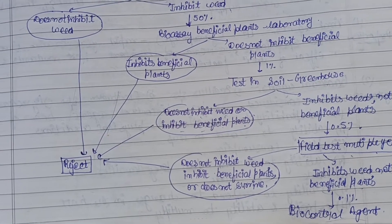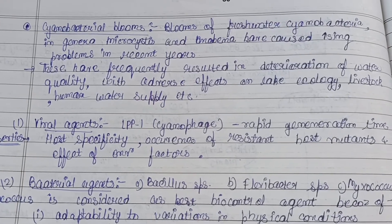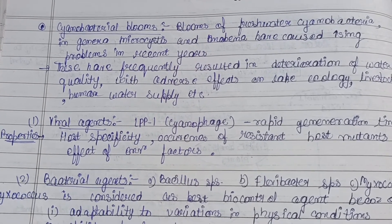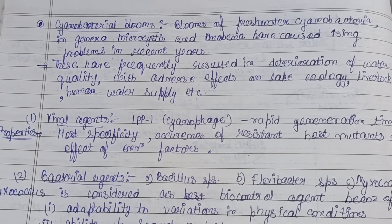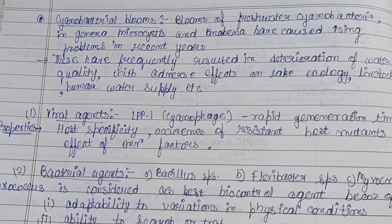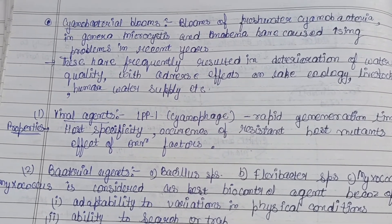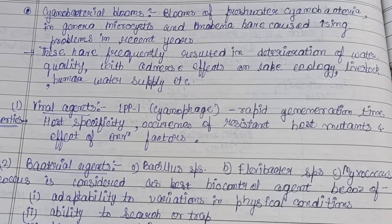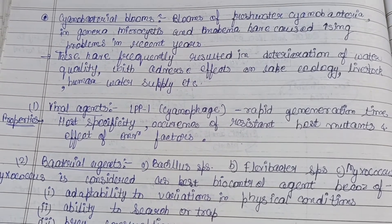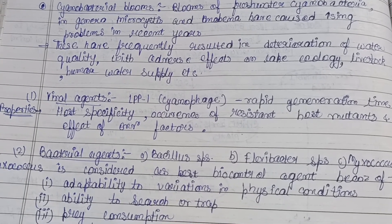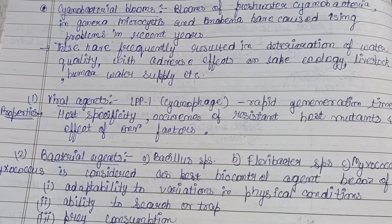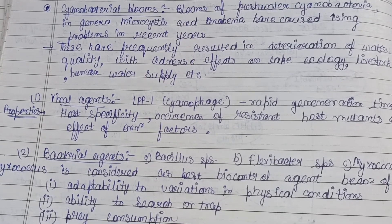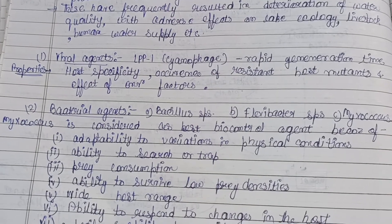Cyanobacterial blooms — fresh water cyanobacteria in genera such as Microcystis and Anabaena — have caused increasing problems in recent years. They frequently result in deterioration of water quality with adverse effects on lake ecology, harming living organisms and plants in lakes, as well as livestock and human water supplies. There is therefore a need to control them, just as with weeds.